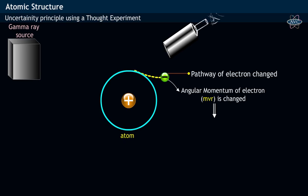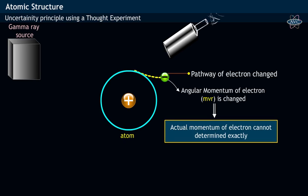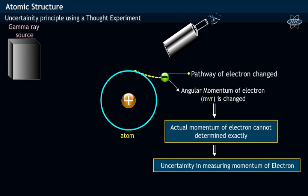As a result of which, the actual momentum of the electron cannot be determined exactly. That is, there exists an uncertainty in measuring the momentum of an electron.